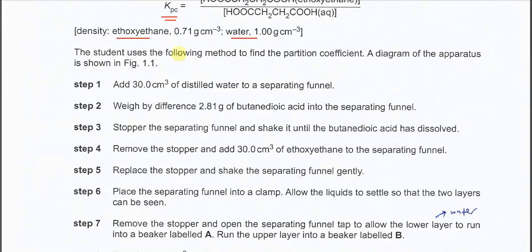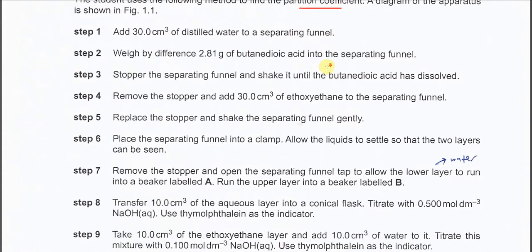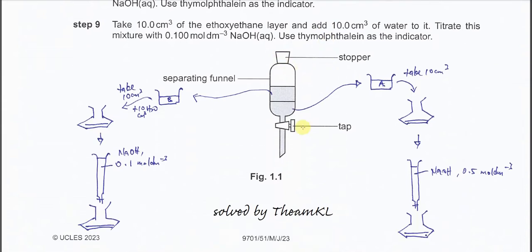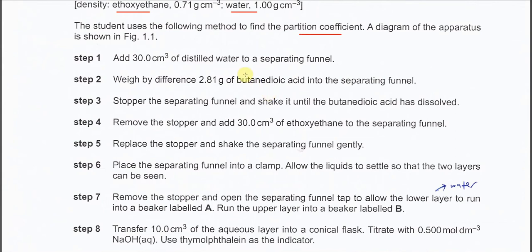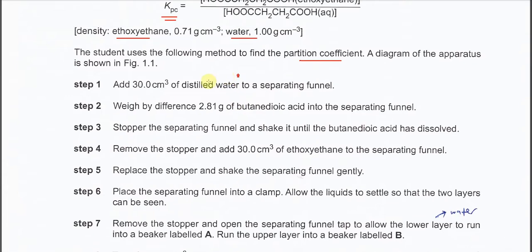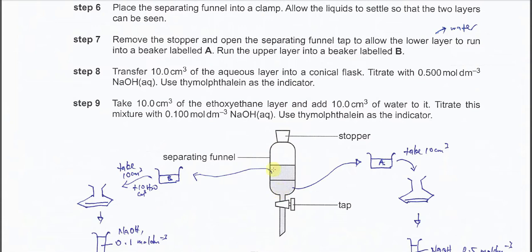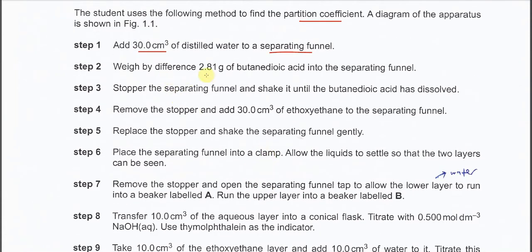The student used the following method to find the partition coefficient, with a diagram given in figure 1.1, involving quite a number of steps. In step 1, 30 cm³ of water is added to the separating funnel. After that, 2.81 grams of butanedioic acid is added into the separating funnel and dissolved in the water first.